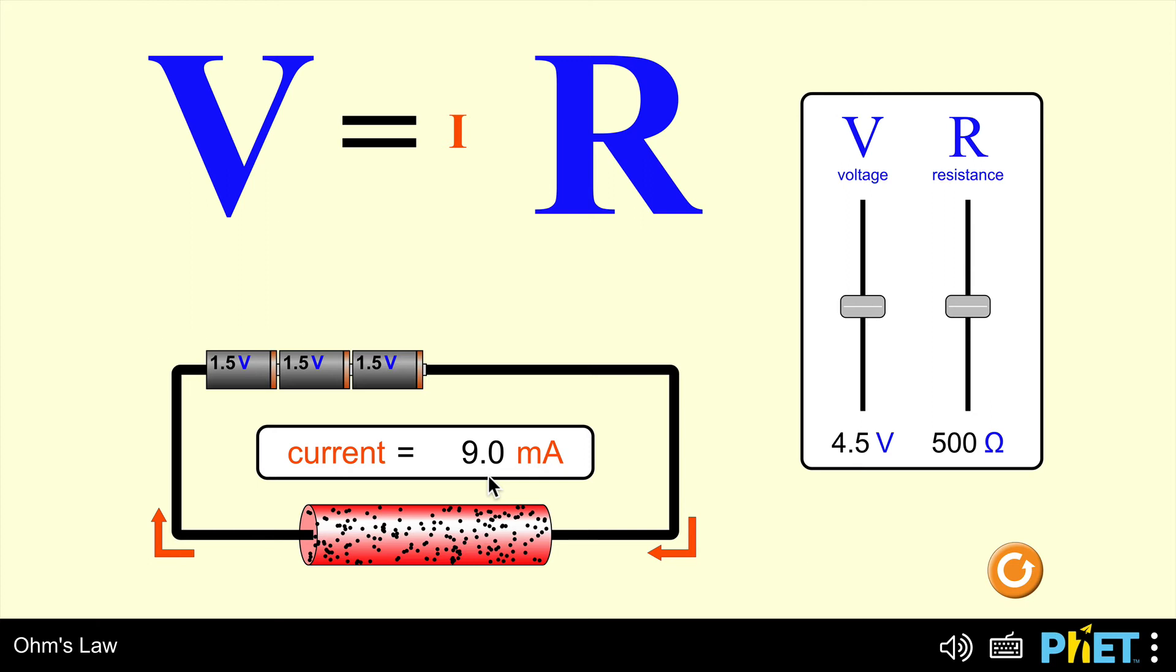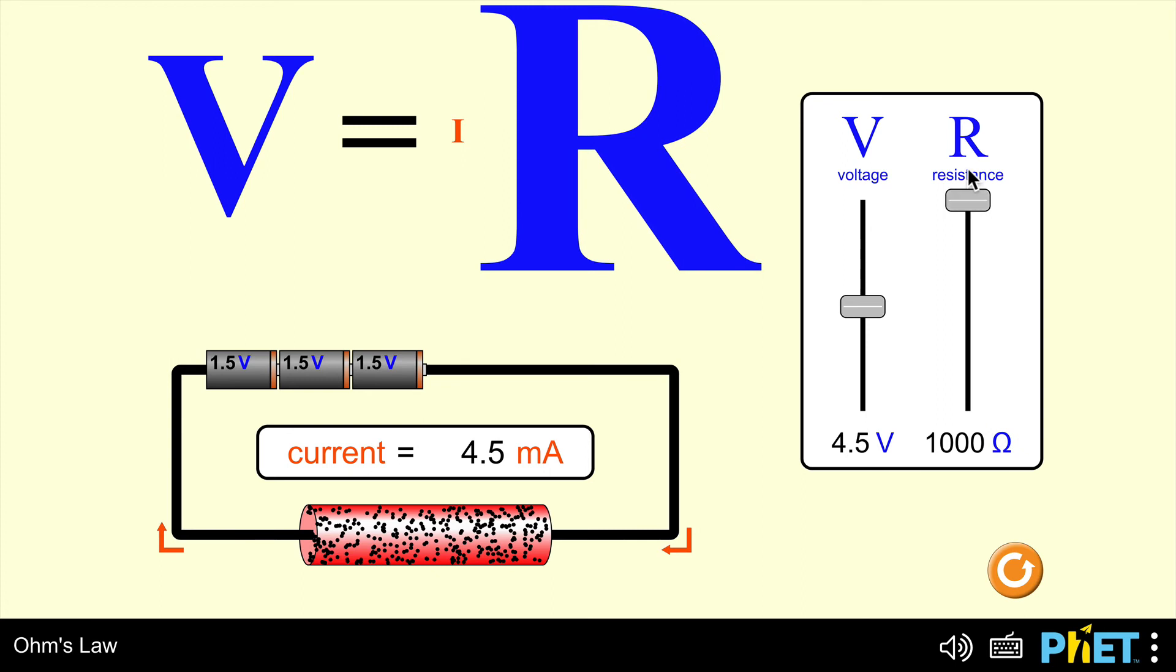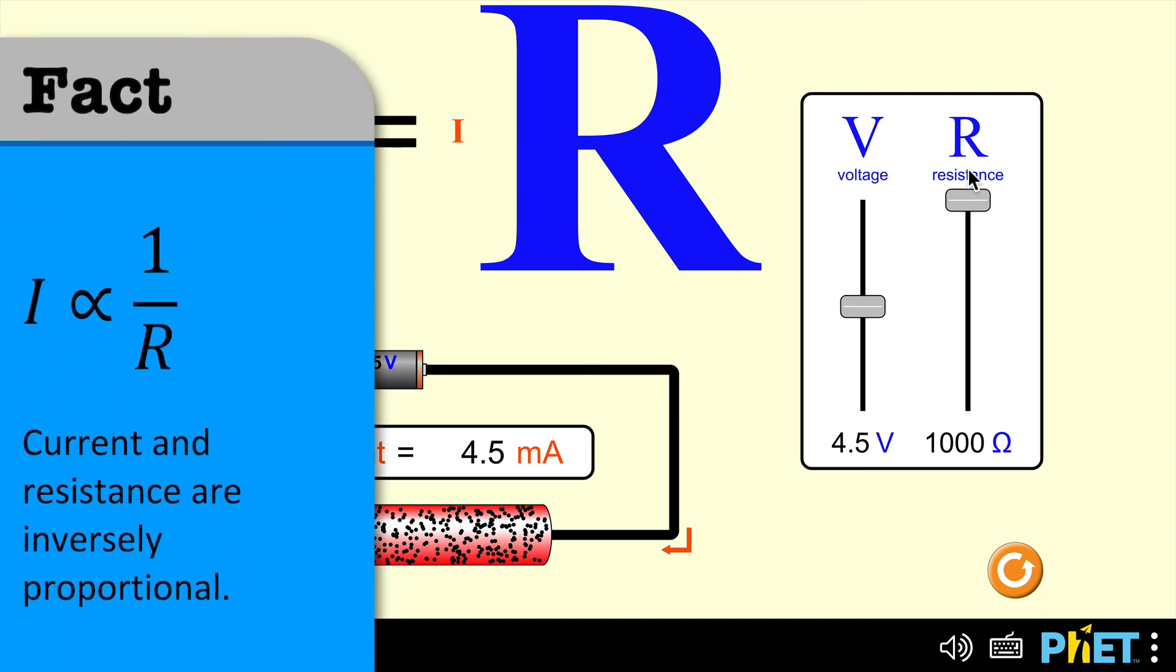What about the current and the resistance? Well, at the moment the resistance is 500 ohms. Current is 9 milliamps. Let's double that resistance up to 1000 ohms. So doubling the resistance, what's actually happened is that the current is now halved. So when I double one of these quantities and the other one is halved, that's what's called inversely proportional.